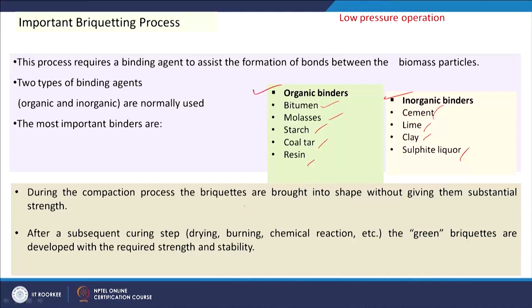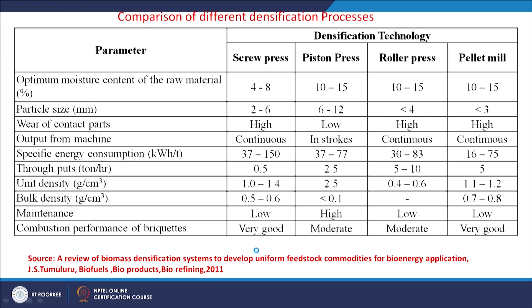During the compaction process, briquettes are brought into shape without giving them substantial strength. After that, a subsequent curing step — drying, burning, or chemical reaction — forms the green briquettes, which then develop the required strength and stability.